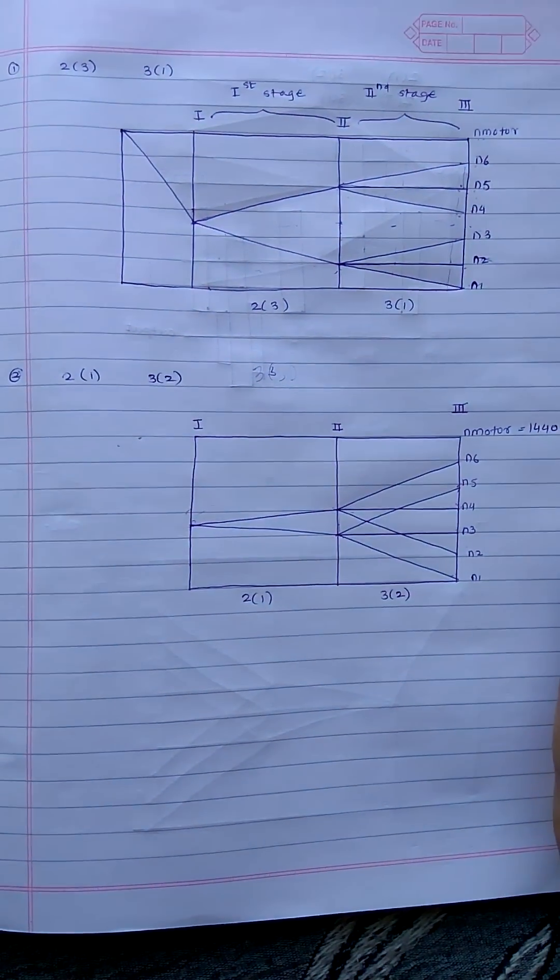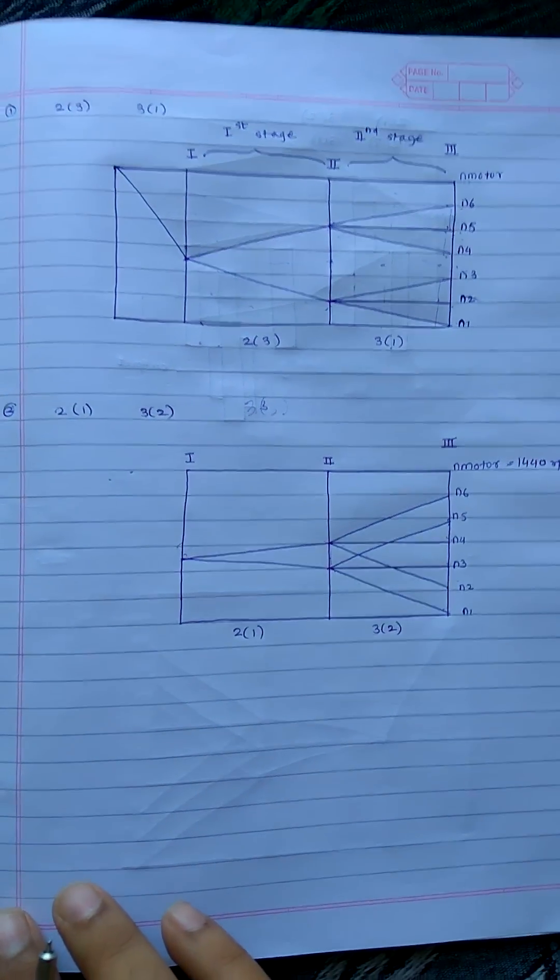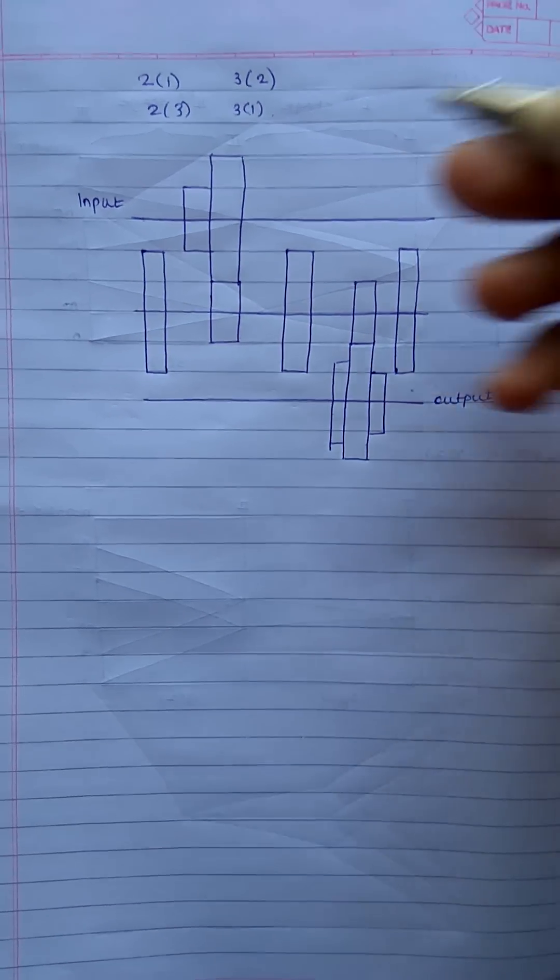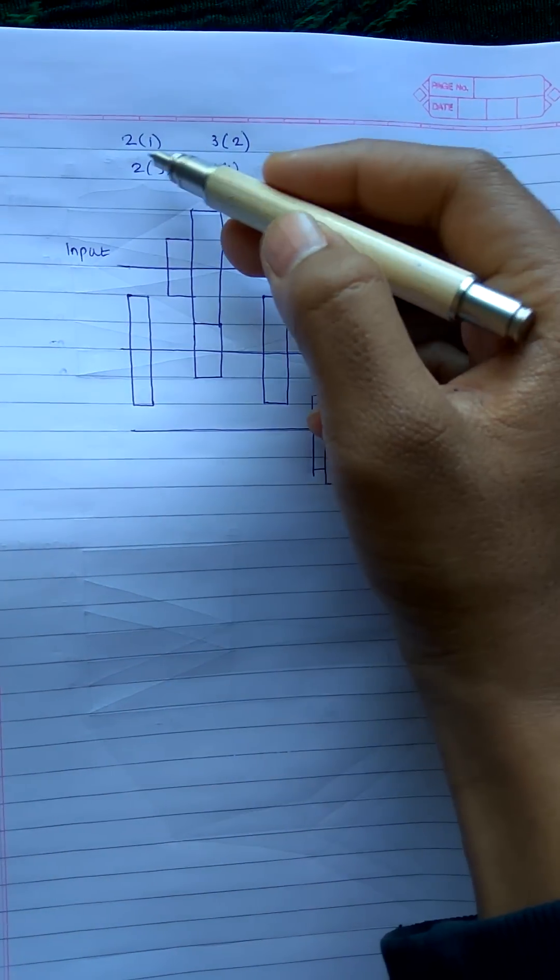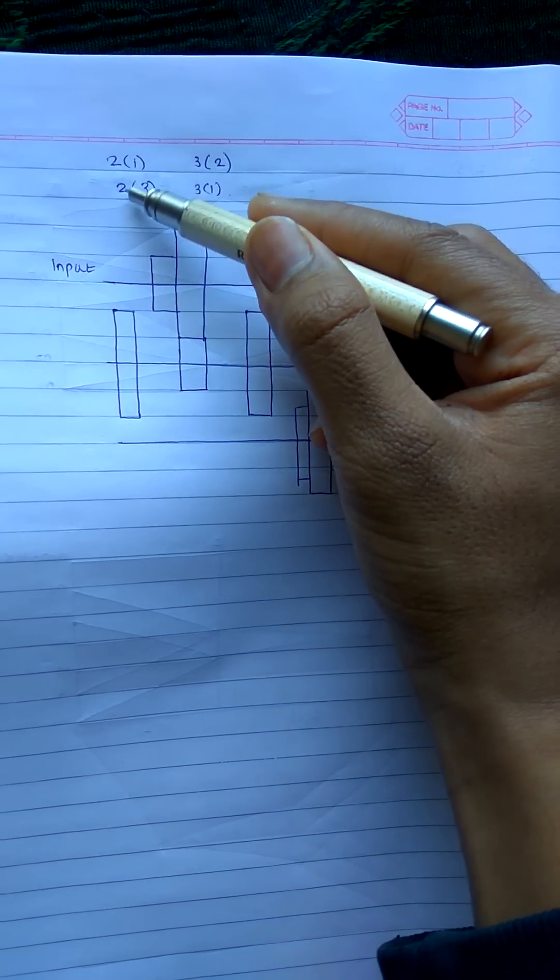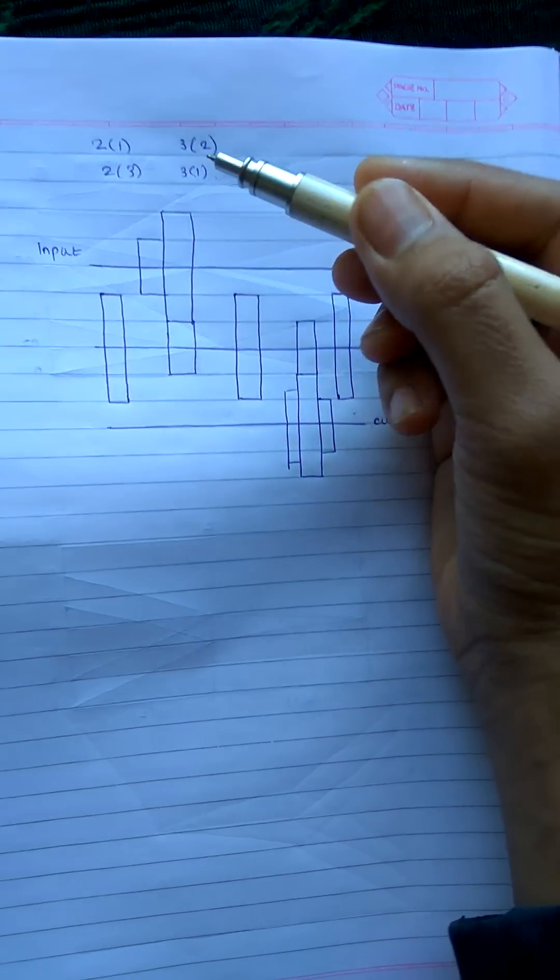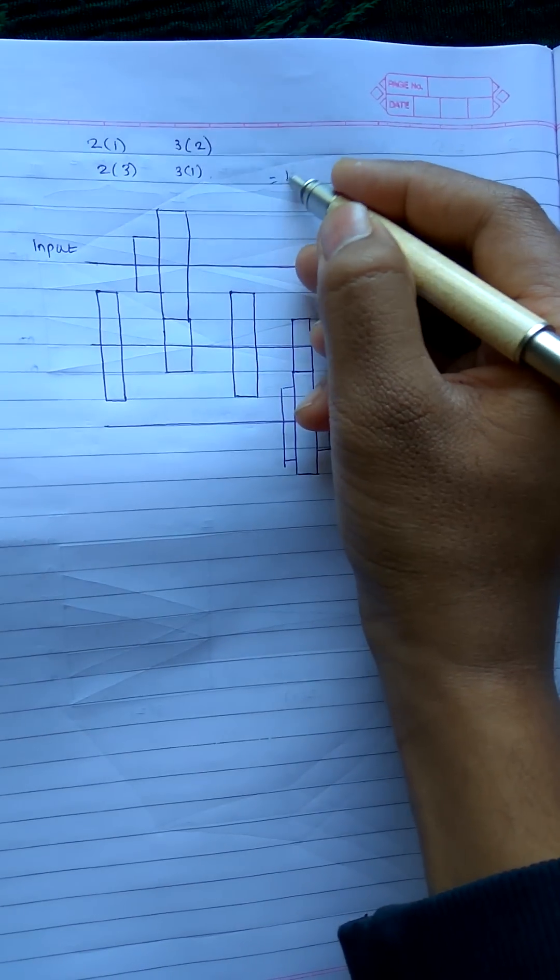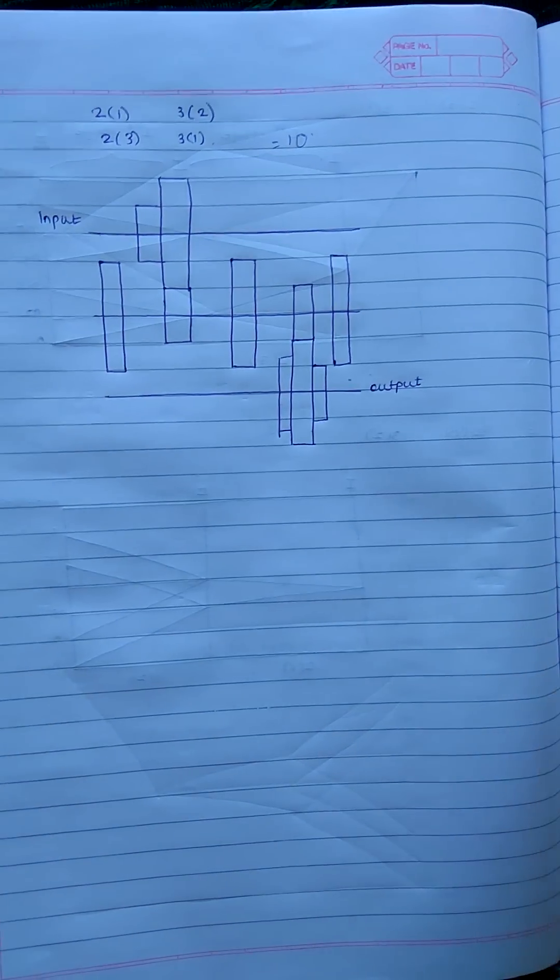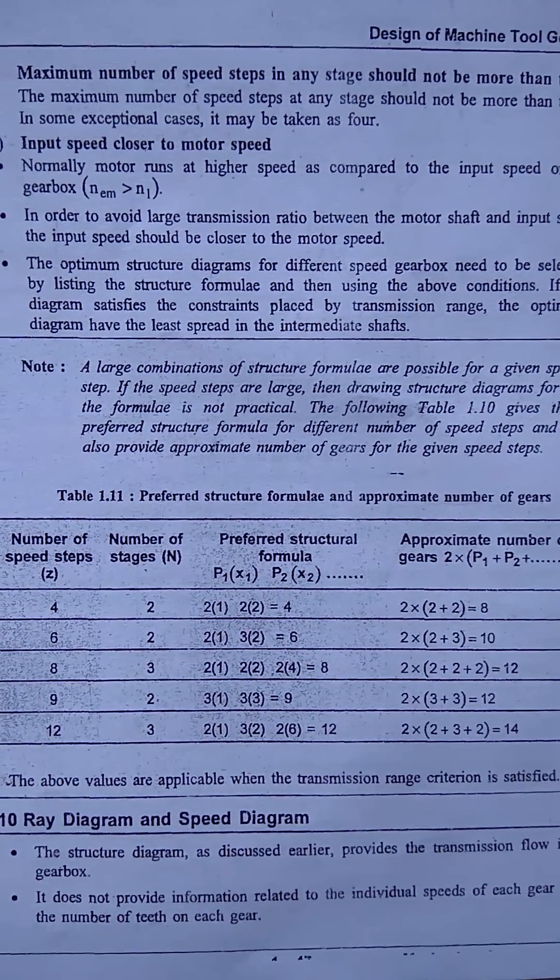Let's see how the gearbox diagram is made. The first step is calculating the number of gears. How to calculate? It depends on 2 times 3, that is 6, or 2 times 3 is 6, and 3 plus 1 is 4. Total is 10.